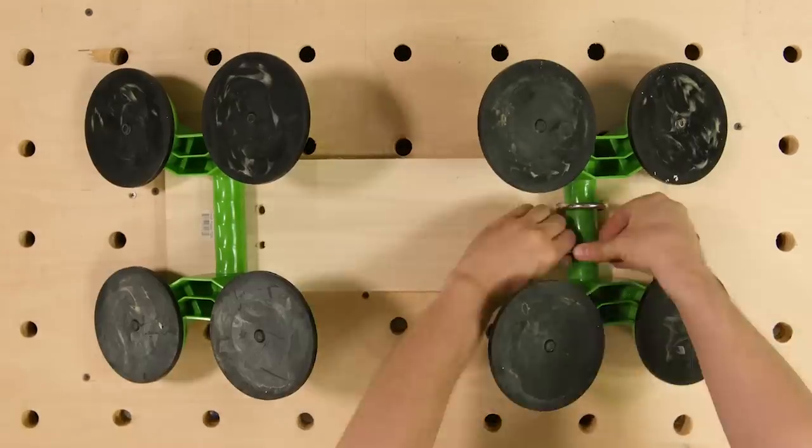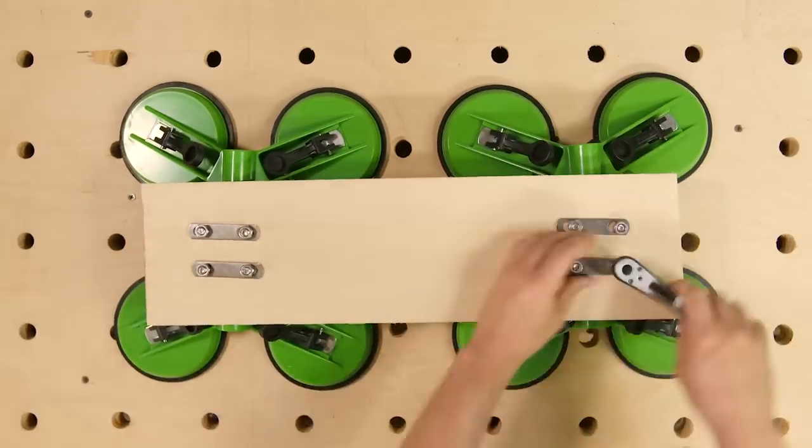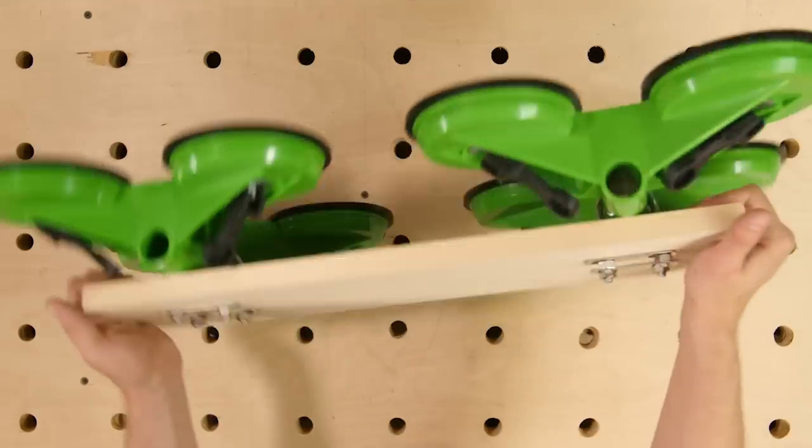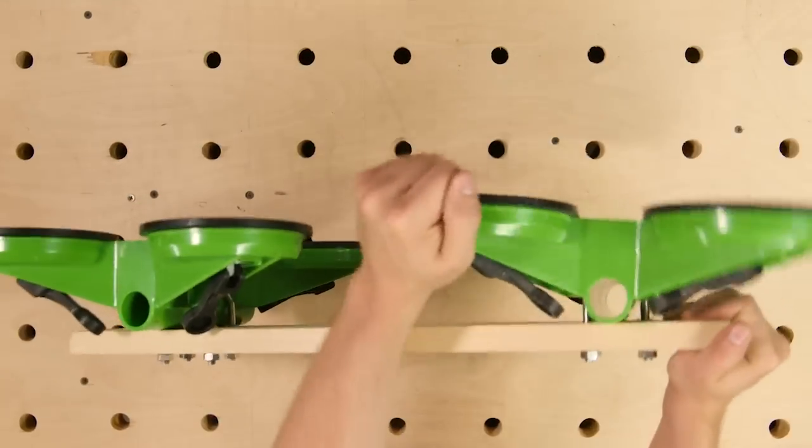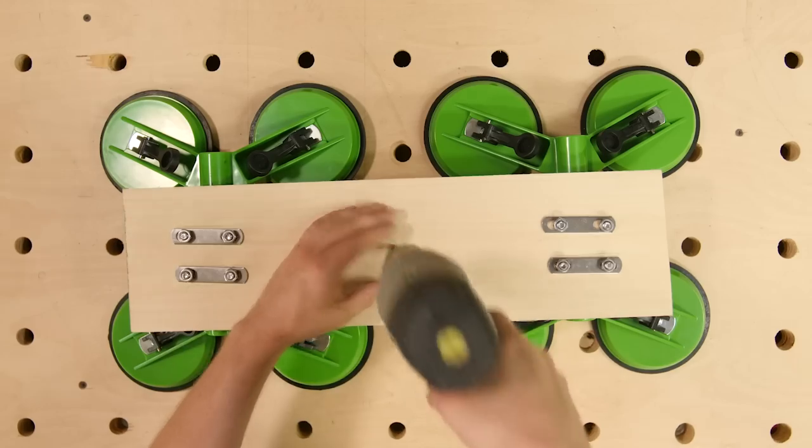Attach the suction cups but only tighten the bolts a bit past what you can do with your hands. This allows for some rotation of the suction cups which will help with the curves of car when attaching.